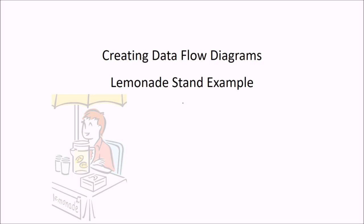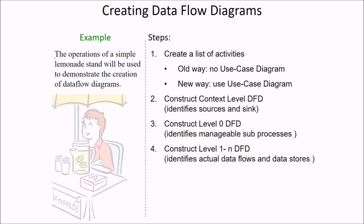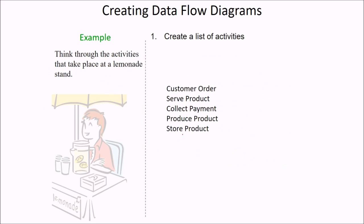Let us create a data flow diagram for a lemonade stand example. The operations of a simple lemonade stand will be used to demonstrate the creation of data flow diagrams. The steps are: we create a list of activities — the old way without a use case diagram, or the new way using a use case diagram. Then we construct the context level DFD, identify the source and sink. Level 0 identifies the manageable sub-processes, and we construct level 1 to N DFD which identifies the actual flows and data stores.